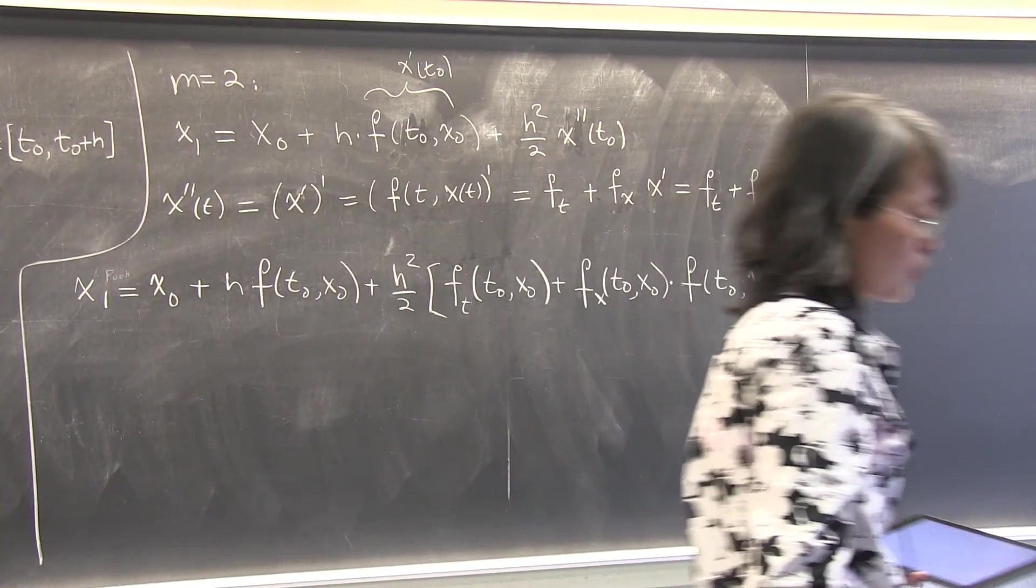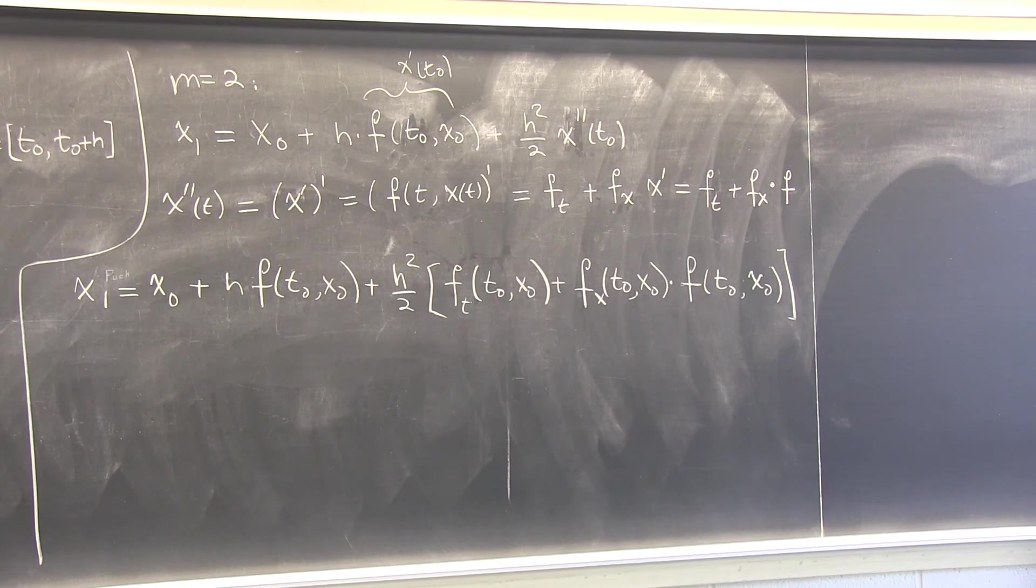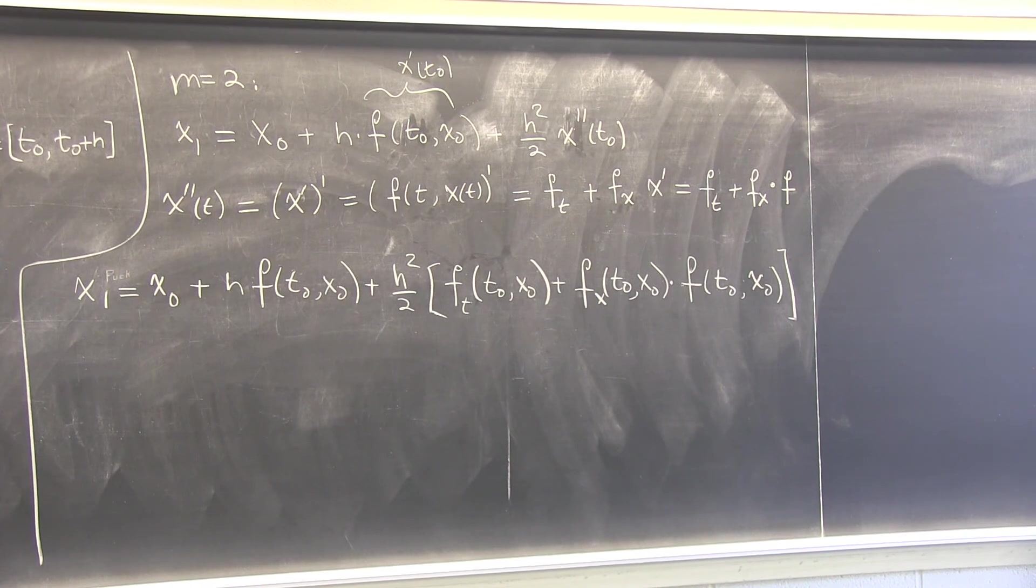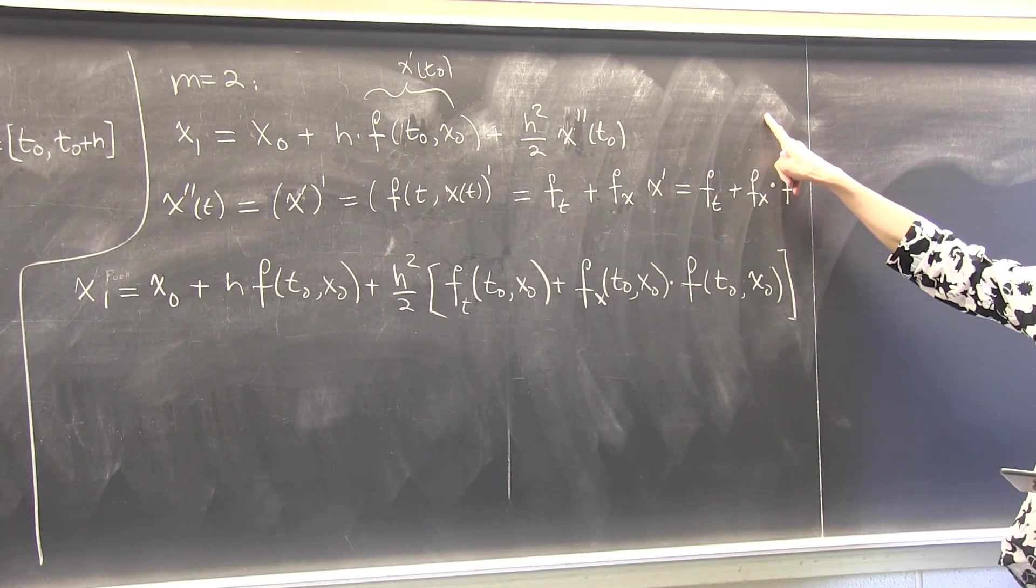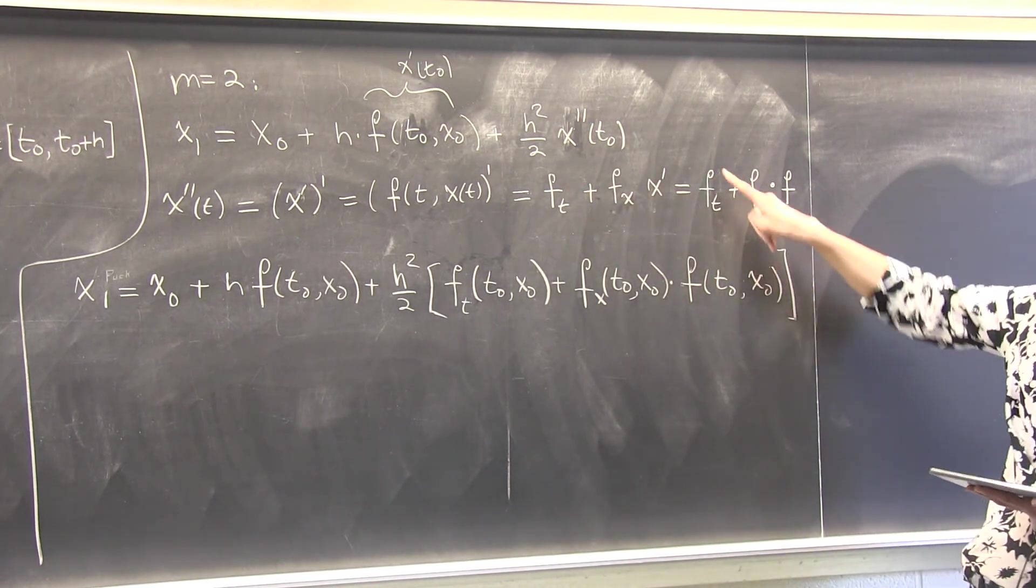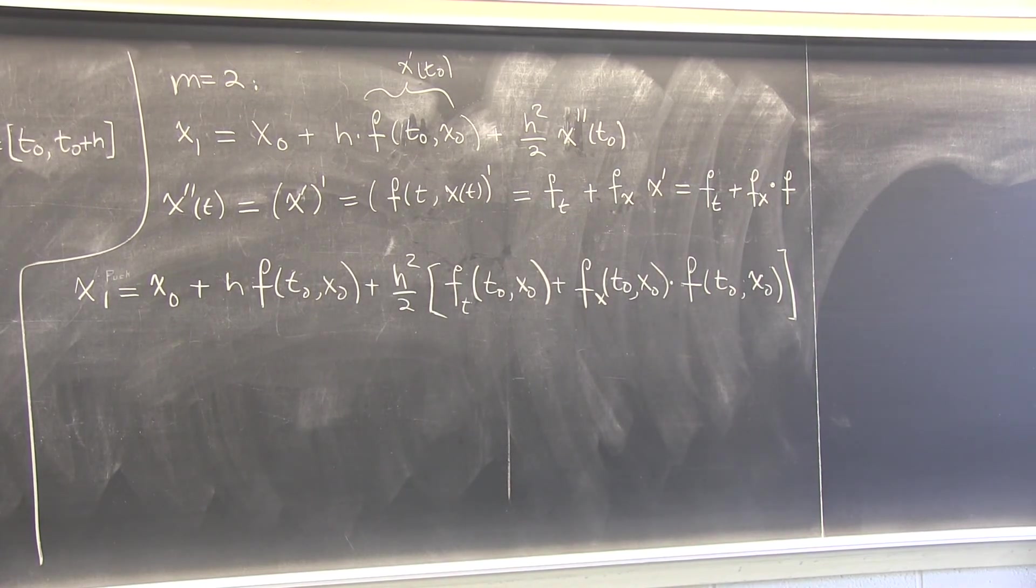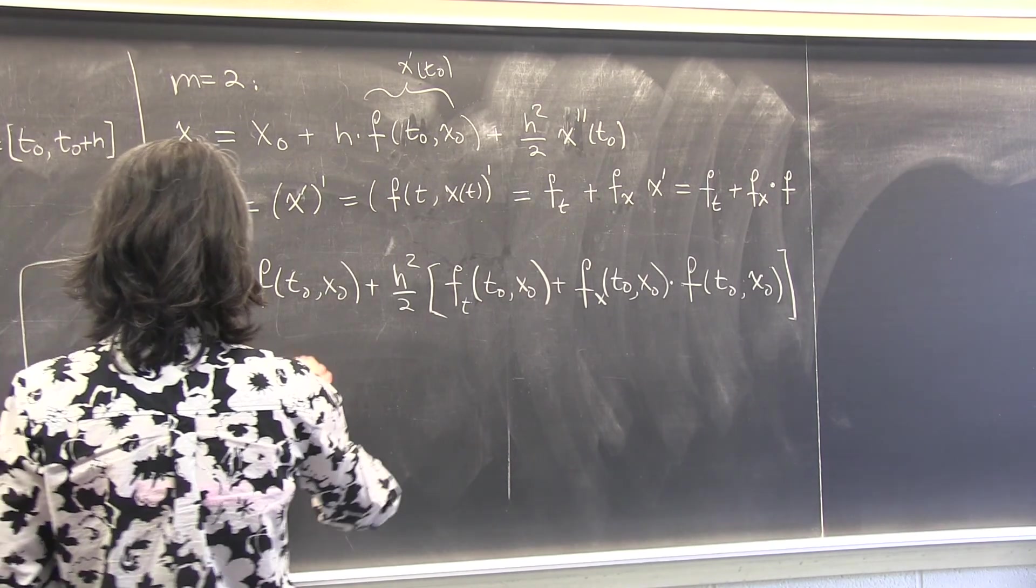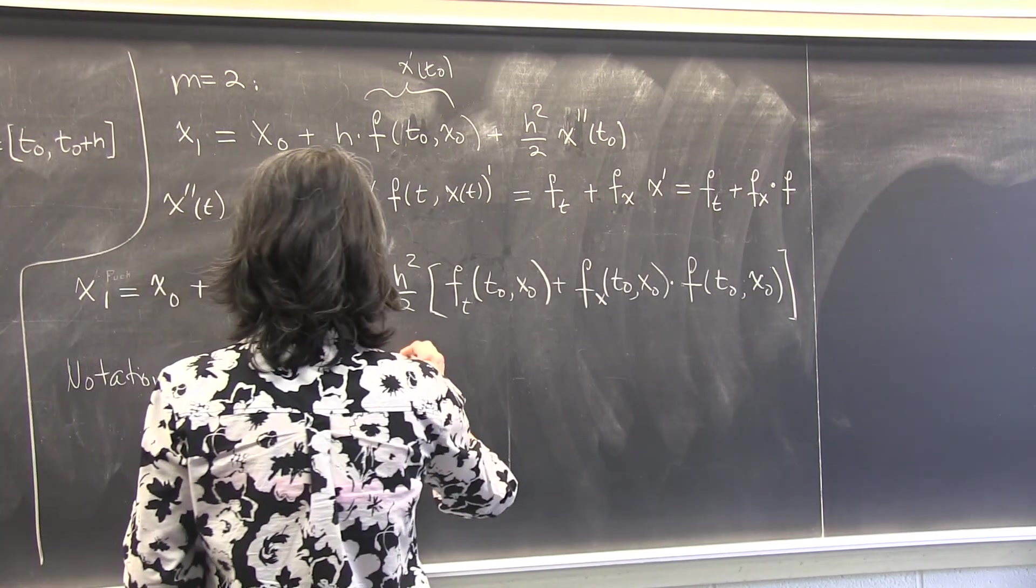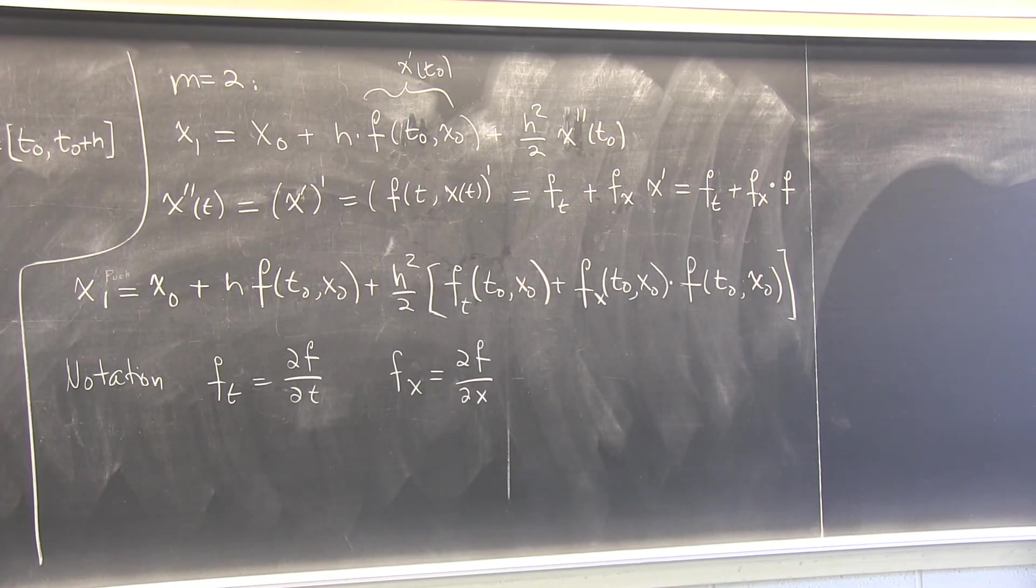So, after these derivations, would you be able to write out Taylor series method for m equals to 3? Can we do that? Would you be able to do that? I mean, I'm not going to do it. It's repetitive, it's the same idea, isn't it? Let's say m equals to 3. The first three terms will be there. You'll be adding one more term, h third over 6 x triple derivative. How do you get that? Well, take the form of the x second derivative and differentiate this one more time in t. It gets big. That's all. So, ft and fx are the partial derivatives. f sub t means partial f partial t. f sub x means partial f partial x.